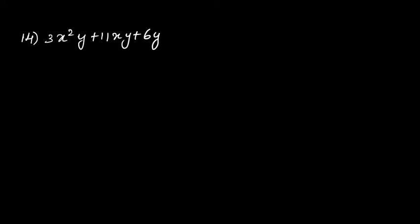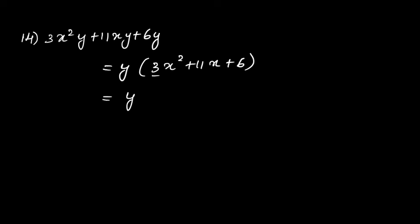Look at all three terms: 3x²y, 11xy, and 6y. In all three terms, y is common, so take it out. When we take y outside we get 3x²+11x+6. Now factorize 3x²+11x+6: multiply 3 × 6 = 18, and down you should get 11.